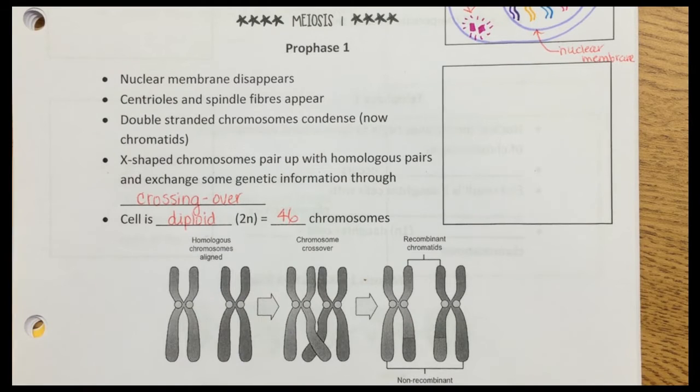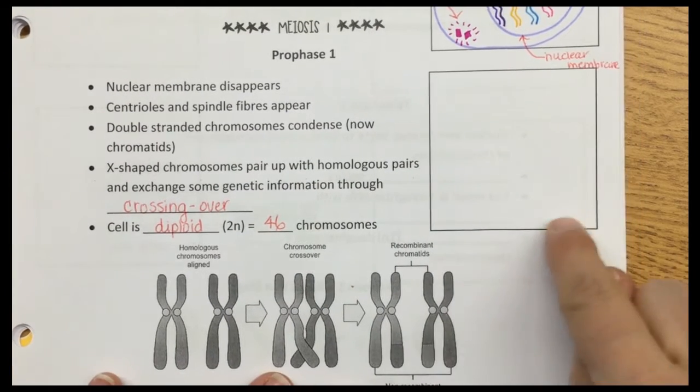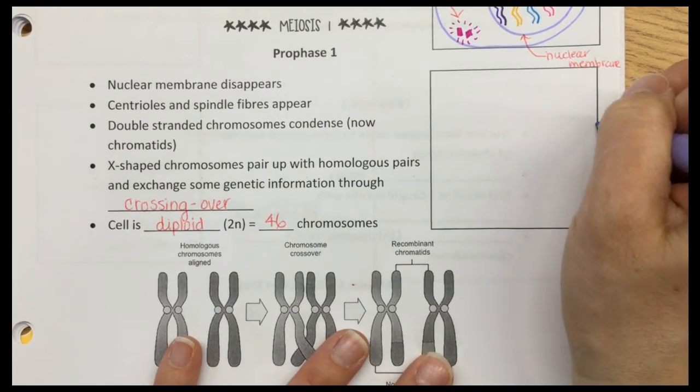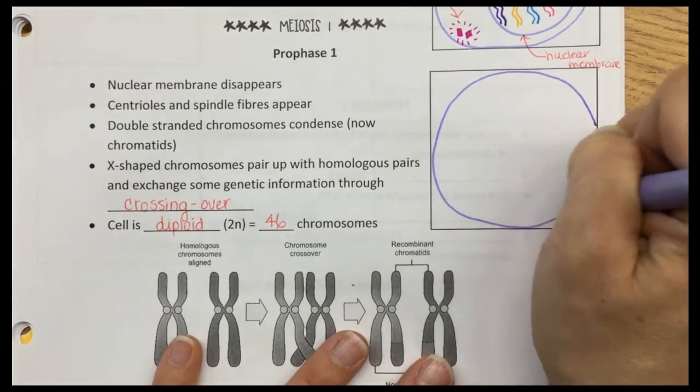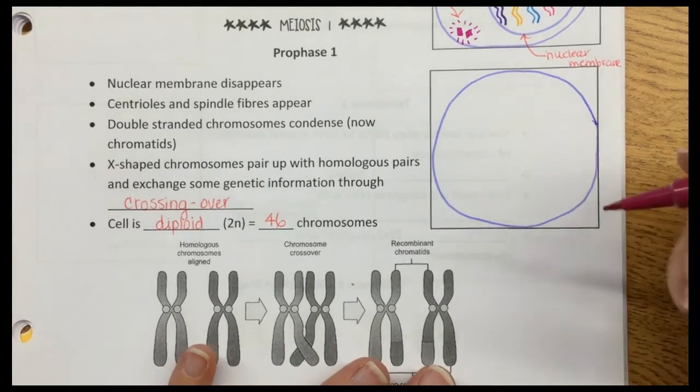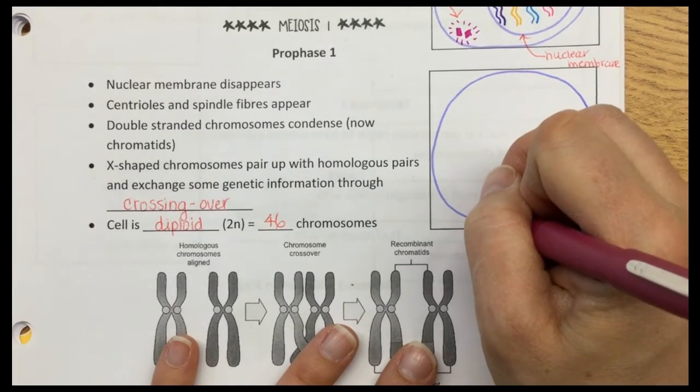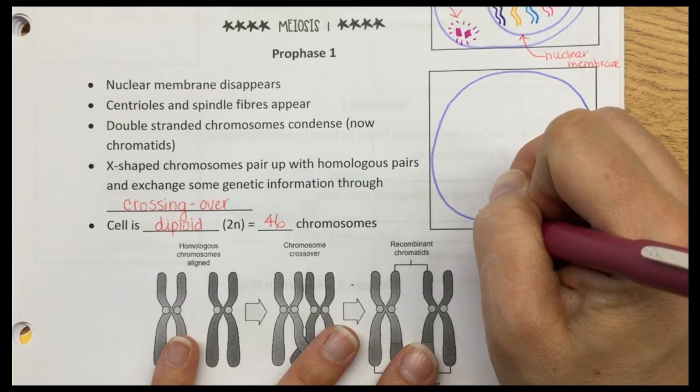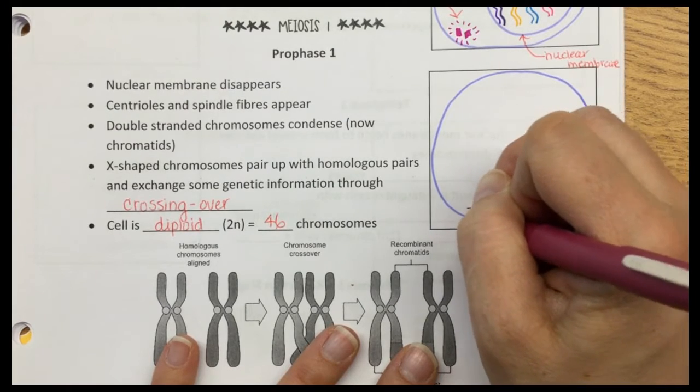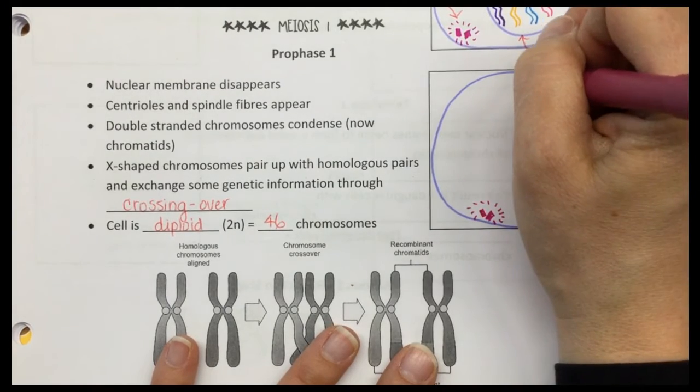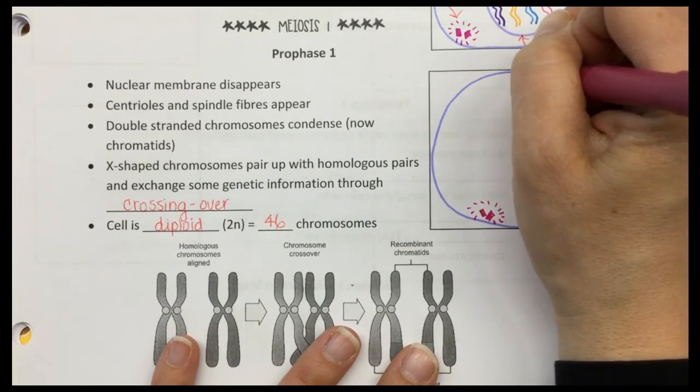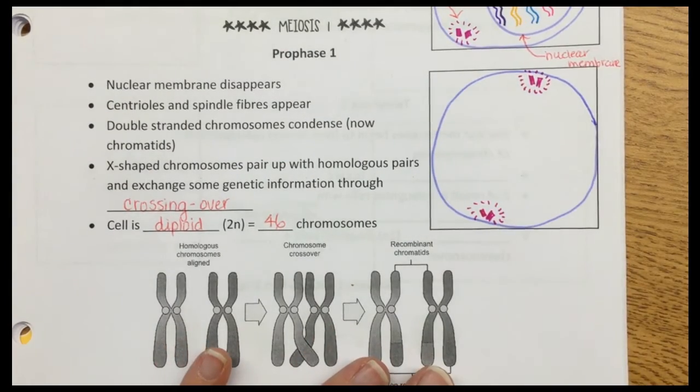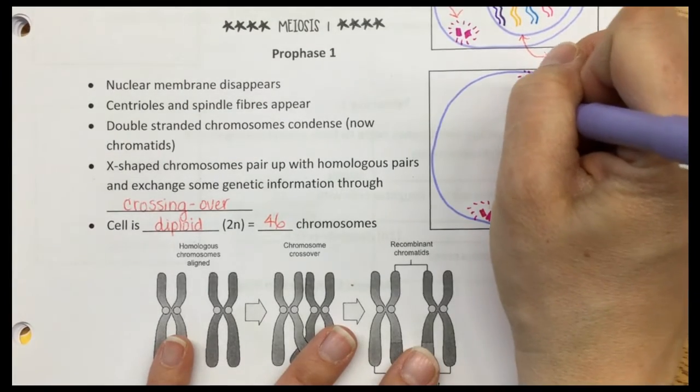Let's draw our cell. In prophase 1, we have our cell membrane. We have our centrioles that have moved to the opposite ends, and our spindle fibers appear.